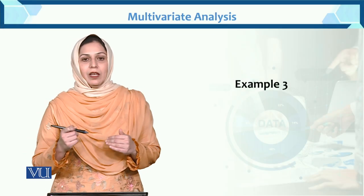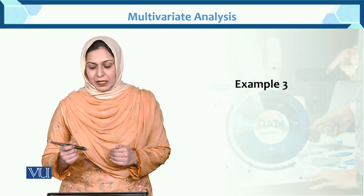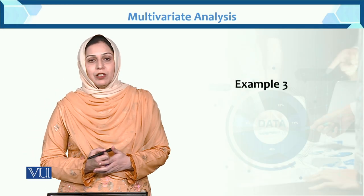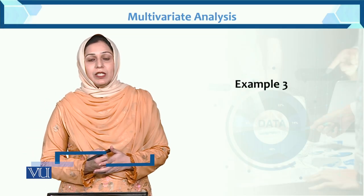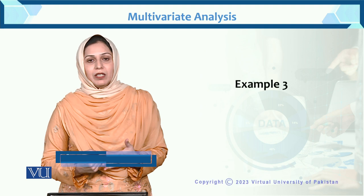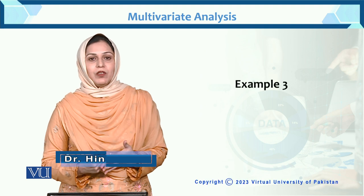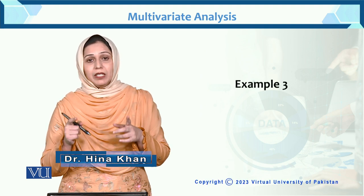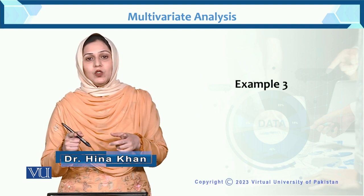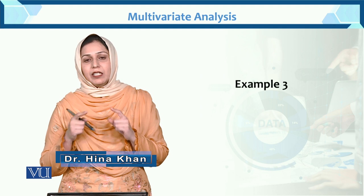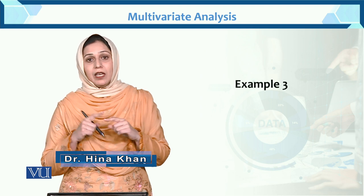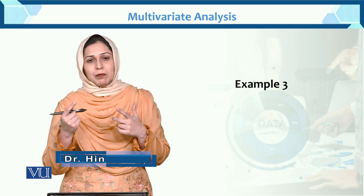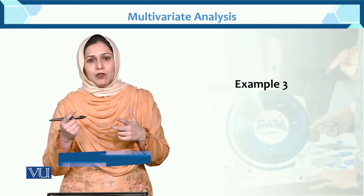Okay students, now we have Example 3. Example 3 is about the mean vector, covariance matrix, and correlation matrix. But here we will use the direct formula, which is the multivariate formula.